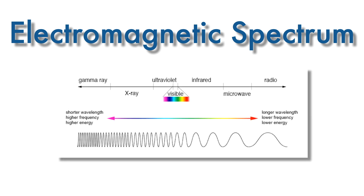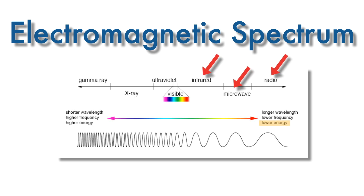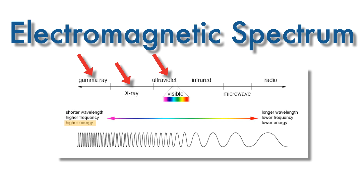So far we've only spoken of light that we can see, but there's more to light than meets the eye. All light actually falls on a spectrum, commonly referred to as the electromagnetic spectrum. Visible light, or the light that we can see, only makes up a small section of that spectrum. The entire spectrum can be characterized by the intensity of light, or how much energy the light radiates. Radio waves, microwaves, and infrared waves all radiate with less energy than visible light, and ultraviolet waves, x-rays, and gamma rays radiate with greater energy than visible light.